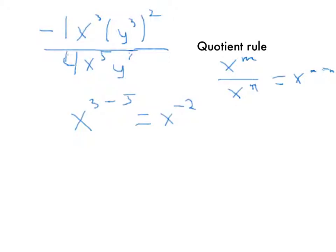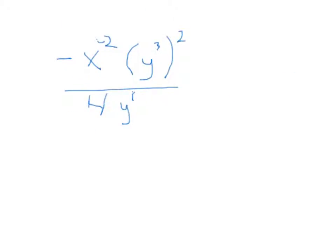So the problem we now have is negative x to the negative second power times y cubed to the second power, divided by 4y to the first power.